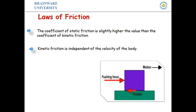The next law: the coefficient of static friction is slightly higher than the value of the coefficient of kinetic friction. When a body is sliding, the friction is less compared to when the body is static. The coefficient of static friction has a slightly higher value than the coefficient of kinetic friction. Additionally, kinetic friction is independent of the velocity of the body — it does not depend on how much velocity the body gains.